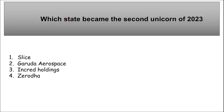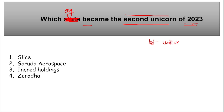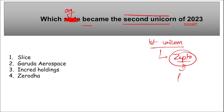Which organization became the second unicorn of 2023? First, Zepto became the first unicorn of India in 2023 — Zepto is a food delivery company. Now, INCRED Holdings became the second unicorn of India in 2023.